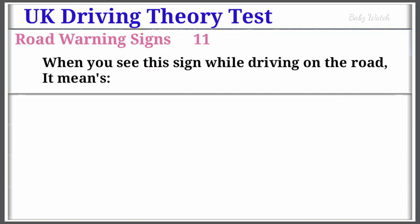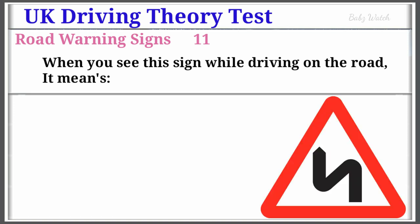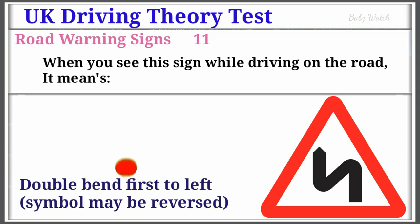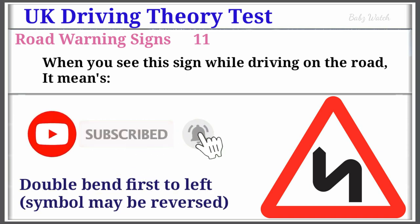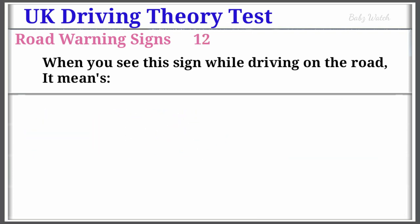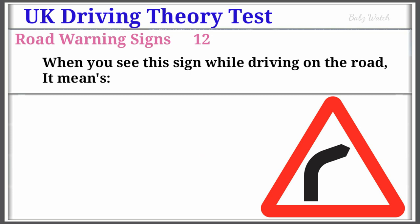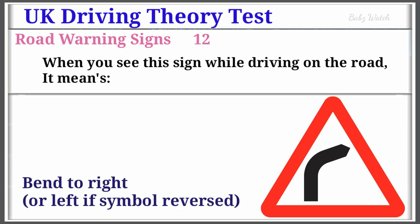UK Driving Theory Test Road Warning Sign Number 11: When you see this sign while driving on the road, it means Double Bend First to Left (symbol may be reversed). Warning Sign Number 12: When you see this sign while driving on the road, it means Bend to Right (or left if symbol reversed).